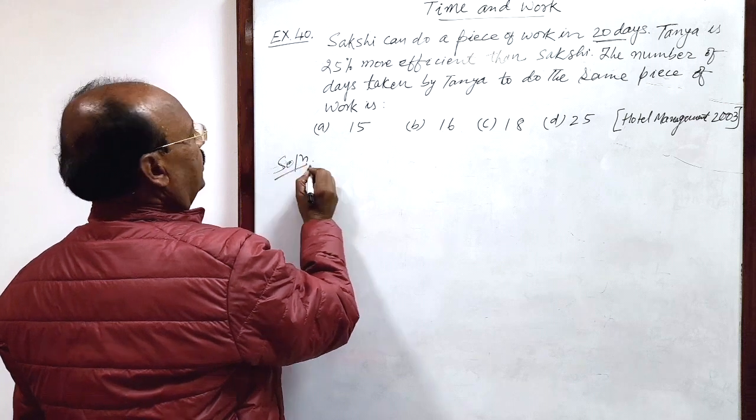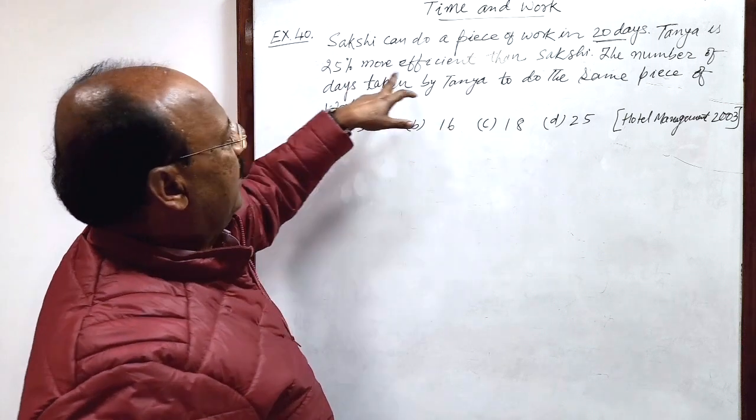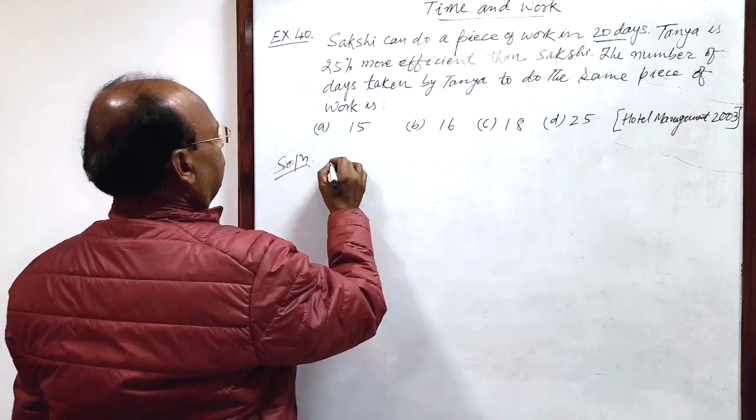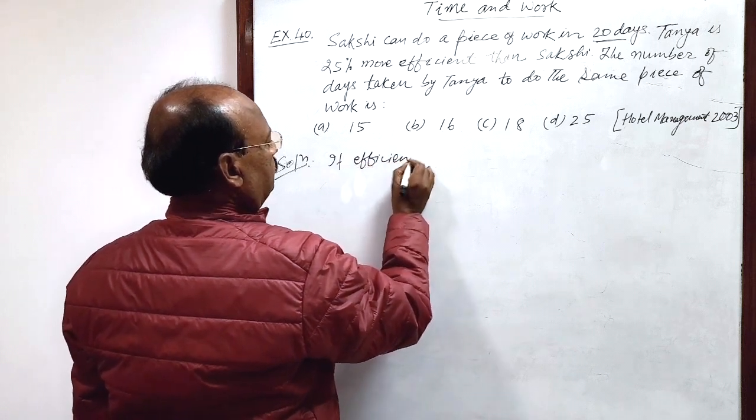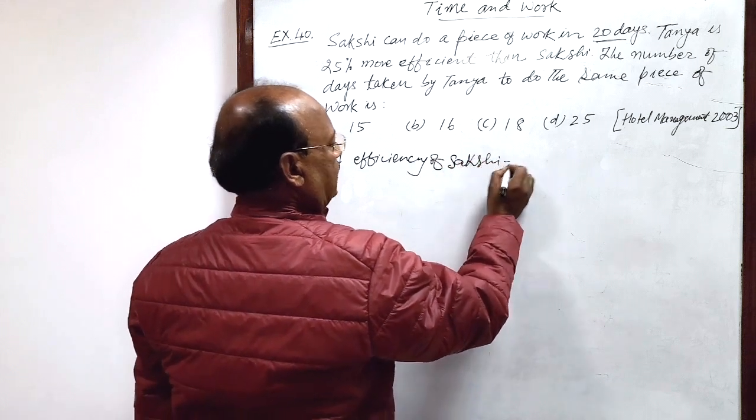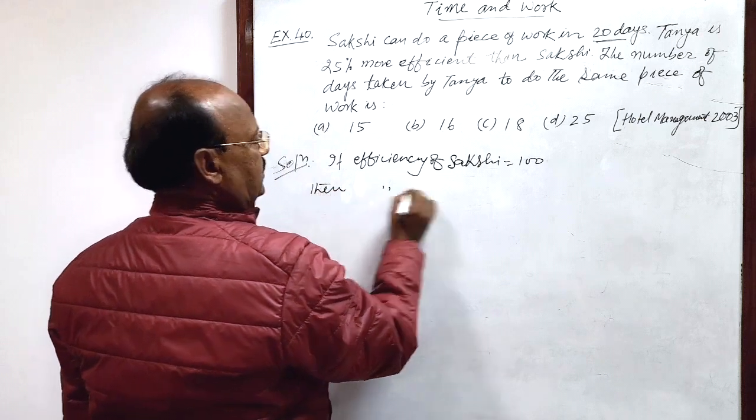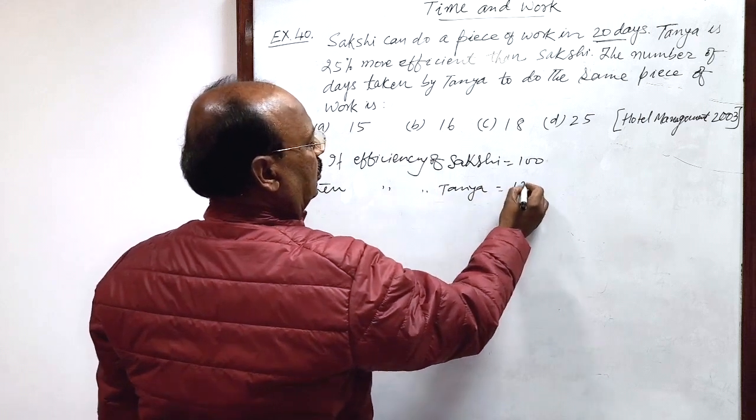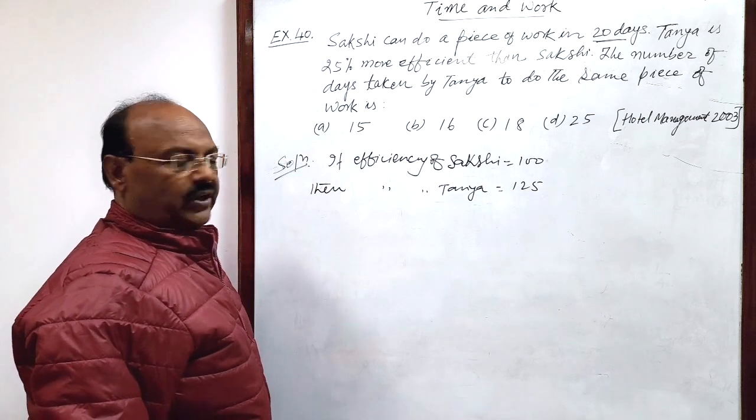Let us see the solution here. Tanya is 25% more efficient. So, if efficiency of Sakshi is equal to 100, then efficiency of Tanya is 25% more, 125.